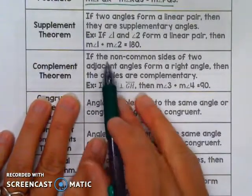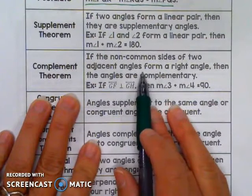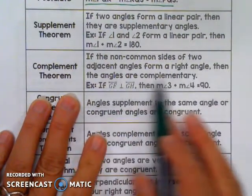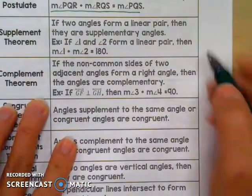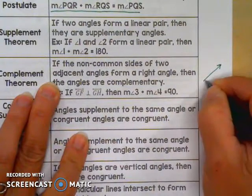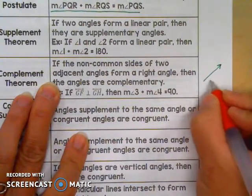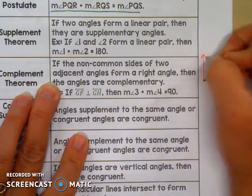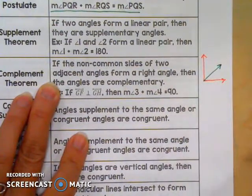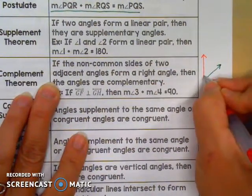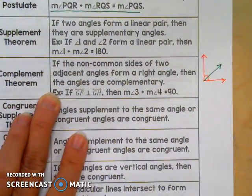Complement Theorem: if the non-common sides of two adjacent angles form a right angle, then the angles are complementary. So I have two angles that are next to each other, and their non-common sides would be the outer sides. If those two non-common sides form a right angle, then the angles are complementary because these two angles are going to add up to 90.